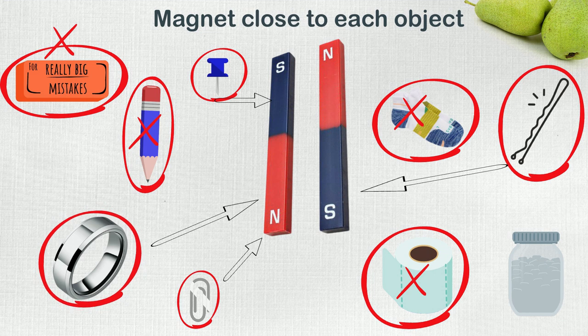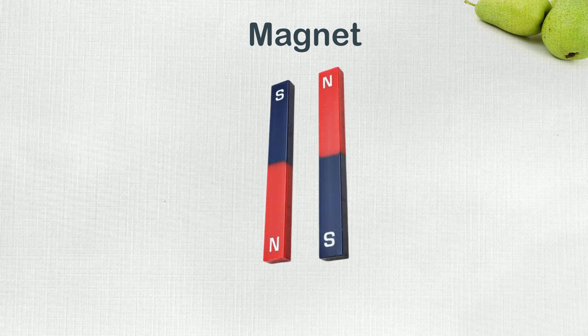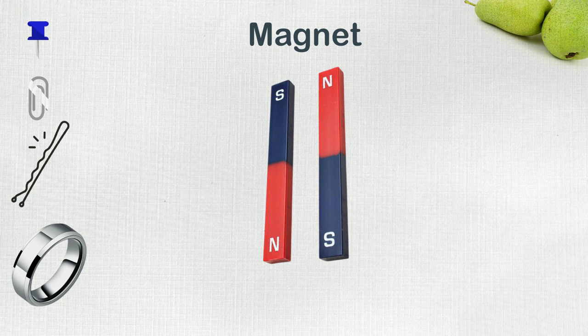Oh, the glass jar did not stick to the magnet. So from the experiment we found that the nail, paper clip, hairpin, and steel ring are attracted towards magnet, and that is because they are made of iron and steel which are magnetic materials.